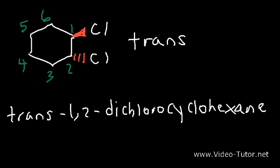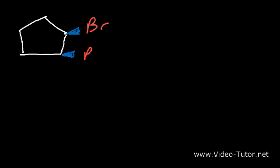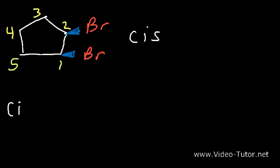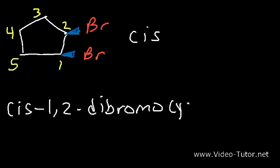How can we name this particular compound? Since both bromine atoms are on the wedge, we have the cis isomer. We have a total of five carbons in the ring, so this is going to be called cis-1,2-dibromocyclopentane.